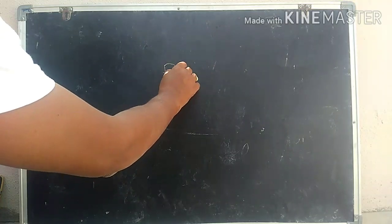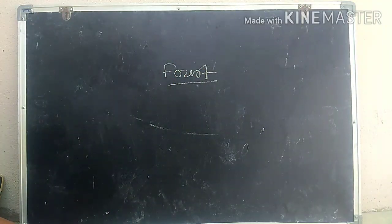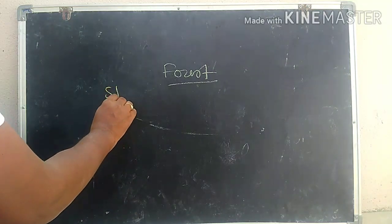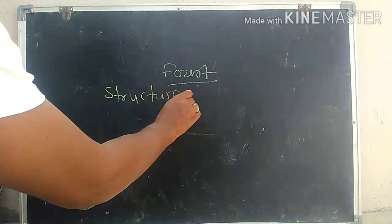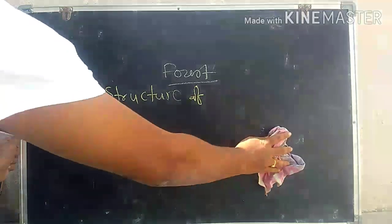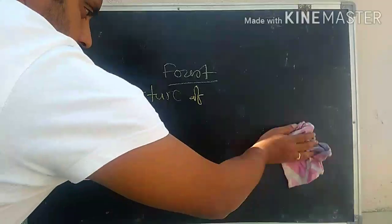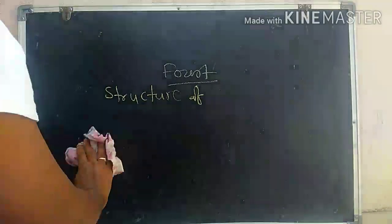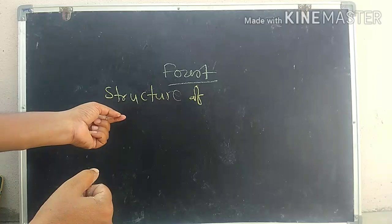Hi children, welcome back to the lesson. In this lesson we are going to learn about the structure of the forest. In the structure of the forest, there are five layers we can see.